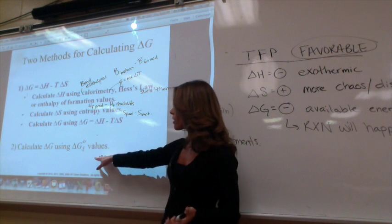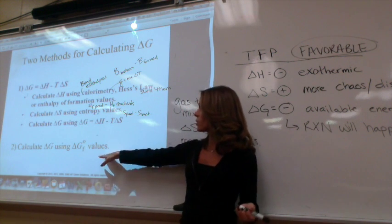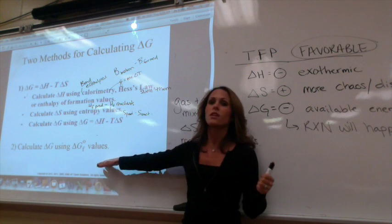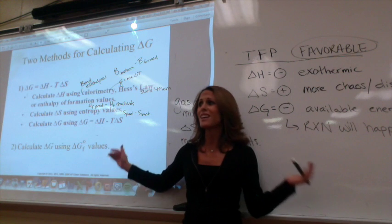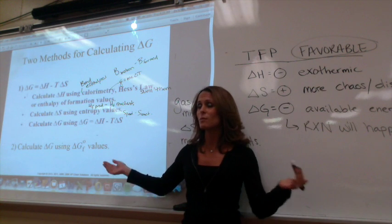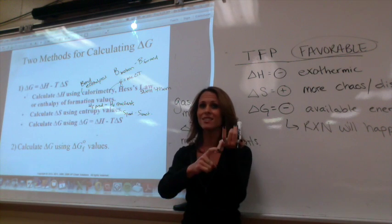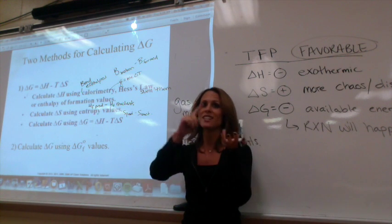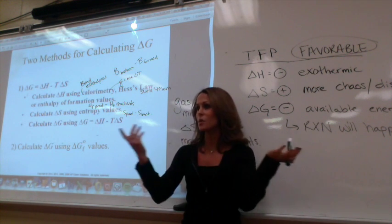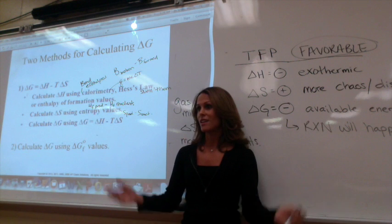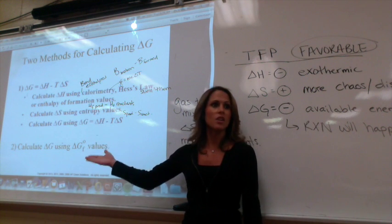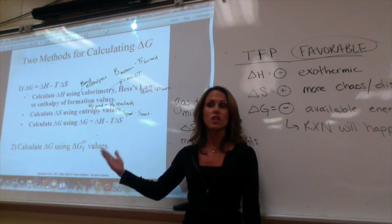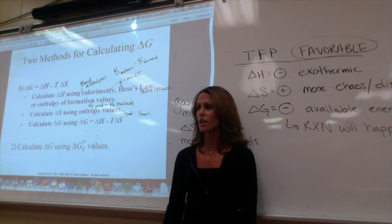The other method is to use delta G of formation values — like delta H of formation, it's products minus reactants. Just keep using products minus reactants each time and you'll get the right answers.